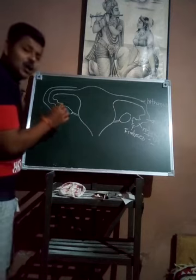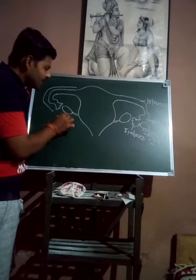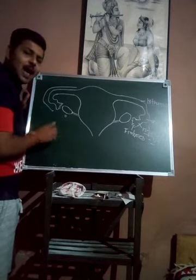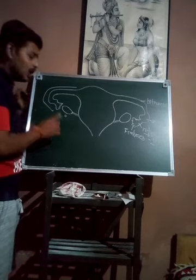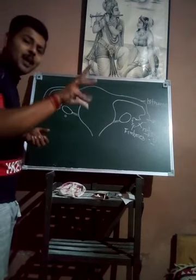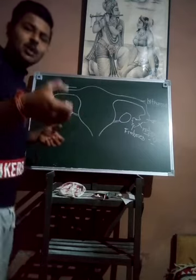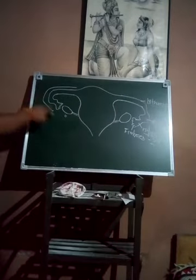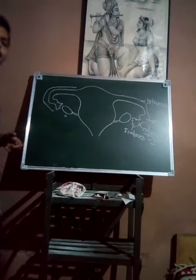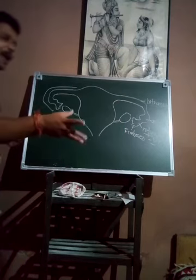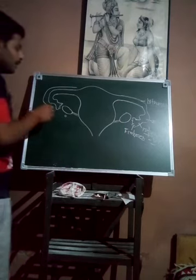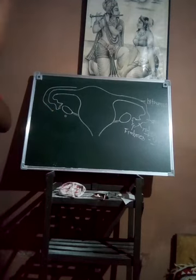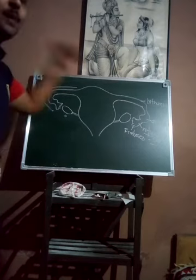The fimbriae are very important. As a result of ovulation, the egg is released from the ovary into the pelvic cavity. The fimbriae, by their movement, create a suction to suck up the egg released into the pelvic cavity. So the different parts of the Fallopian tubes — fimbriae, infundibulum, ampulla, and isthmus — are now clear.